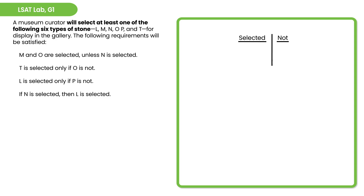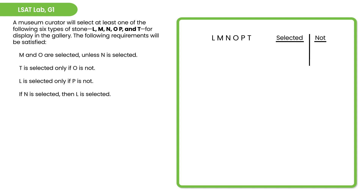So we're going to have a selected versus not selected column chart. Here's our cast of characters: L, M, N, O, P, and T. We write them down next to the game board, and that's it for a good game board. We just need to have a place to put our players to create hypotheticals. It's relatively straightforward for in-out grouping.